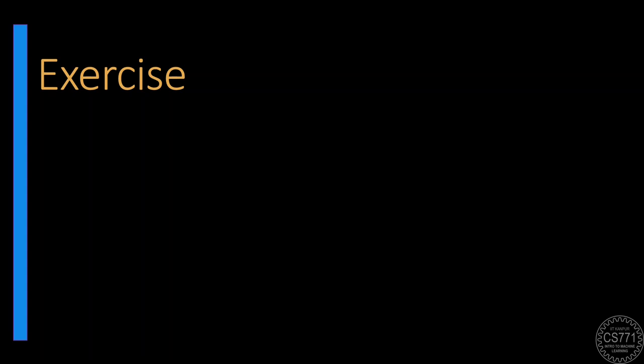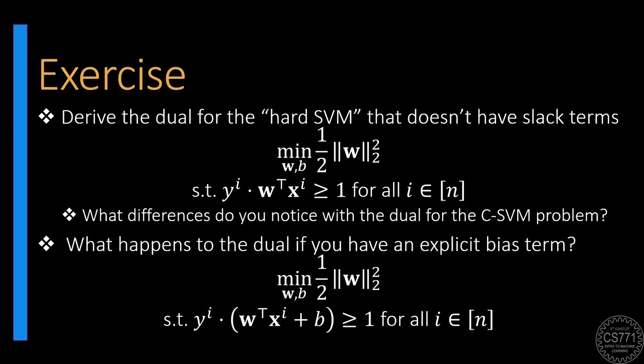To get some more practice on constructing duals, derive the dual for the hard SVM problem with the hidden bias as well as with an explicit bias. Recall that the hard SVM formulation has no slack variables and it makes sense only when we have a classification problem that is linearly separable.